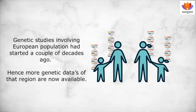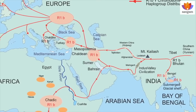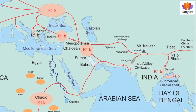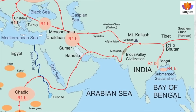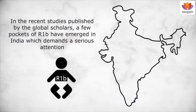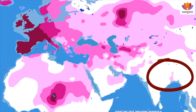Genetic studies involving the European population had started a couple of decades ago, and hence more genetic data of that region are now available. As other territories got included in the genetic studies, unusual R1-Bravo pockets emerged which further complicated the issue. Indian population have been included in the genetic studies comparatively recently. In the recent studies published by global scholars, a few pockets of R1-Bravo have emerged in India which demand serious attention. Interestingly, an isolated pocket of R1-Bravo genetic identity is found on the east coast of India which has not received the required attention so far.